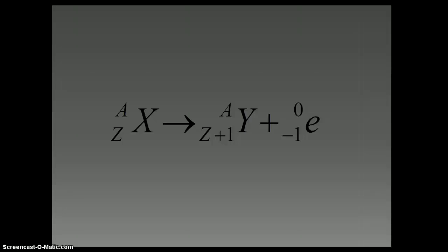What would happen is that you would get element y, which has the same mass number. Mass number does not change in this case. But your atomic number gets bumped up by one. You add one to your original atomic number. Also, you'll get an electron released.